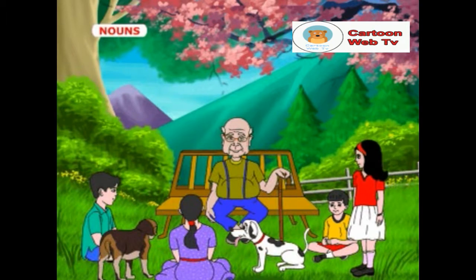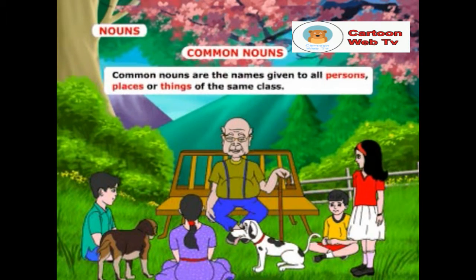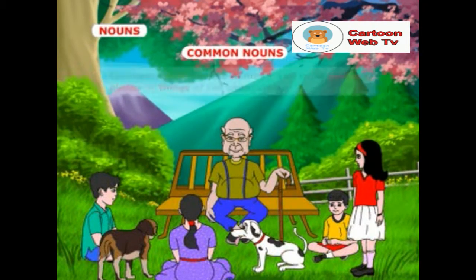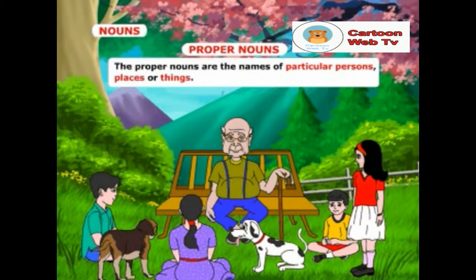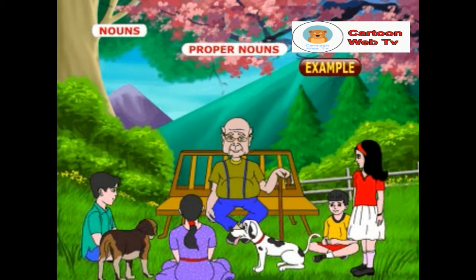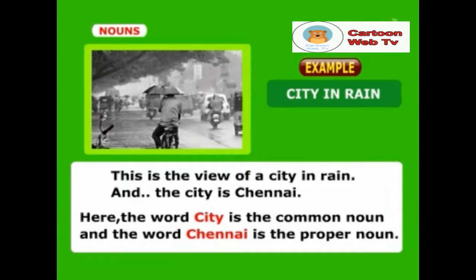Grandpa, what are common nouns and proper nouns? Common nouns are the names given to all persons, places or things of the same class. Whereas, proper nouns are the names of particular persons, places or things. Here is an example. Look at this picture — this is the view of a city in rain, and the city is Chennai. Here, the word city is the common noun, and the word Chennai is the proper noun since it refers to a particular city.